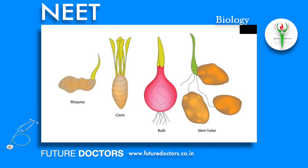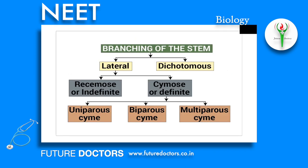Tubers are the swollen terminal end of underground stem branches. Each tuber has many notches on the surface called eyes or buds, which are actually reduced forms of internodes that can grow into new plants. Bulbs have a large number of fibrous adventitious roots at the base, and leaf bases form the bulblets. The stem may be branched or unbranched.